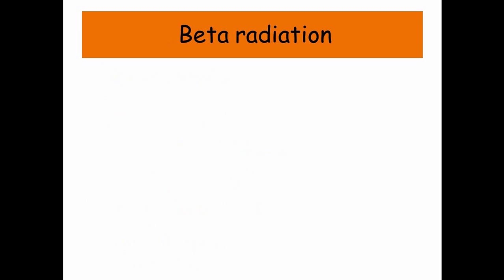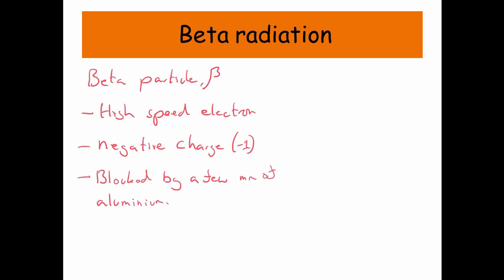Beta radiation. So beta radiation is a particle, and in fact it's actually a very high speed electron. It's got a negative charge, a relative negative charge of minus one. It's blocked by a few millimeters of aluminum, and it is also deflected by magnetic and electric fields just like the alpha particle.